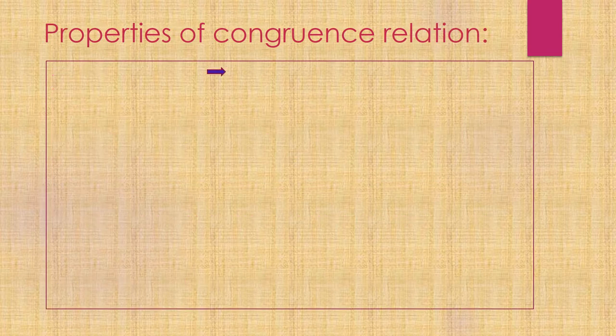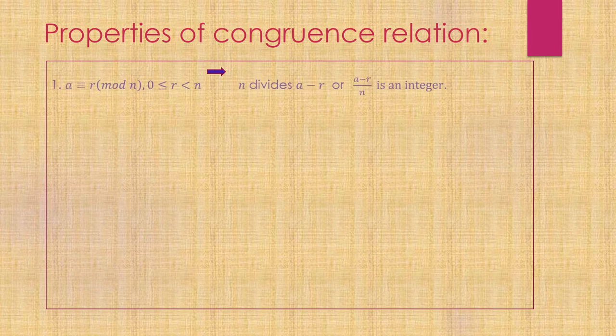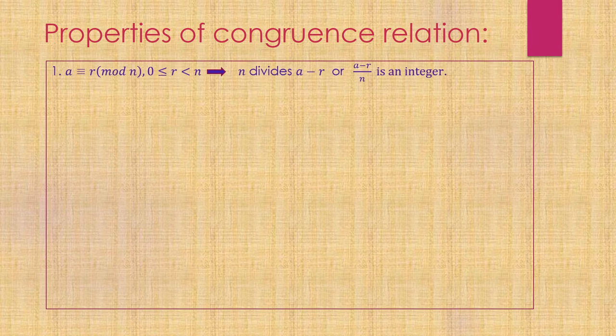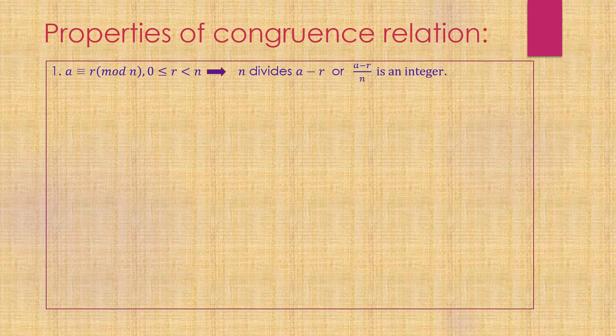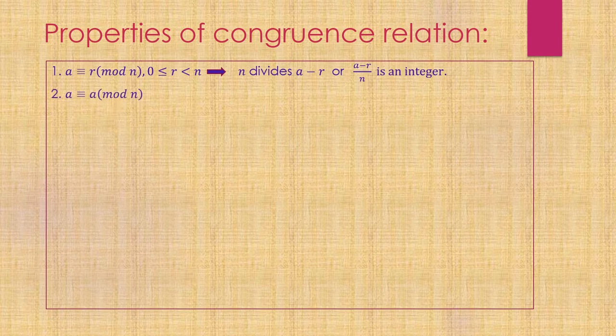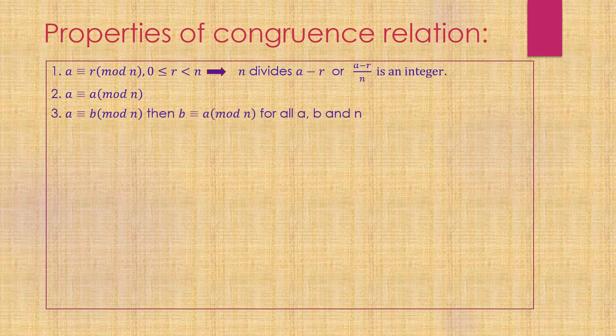Properties of congruence relation. If a is congruent to r modulo n, then n divides a minus r. In other words, (a minus r) divided by n must be an integer. a is always congruent to itself. If a is congruent to b modulo n, then b is also congruent to a modulo n.